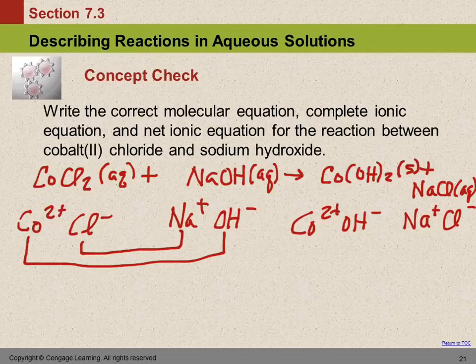On the left side of the arrow, we have one cobalt ion, and on the right side, we have one cobalt. So that's okay. On the left, we have two chlorides, and on the right, we only have one. So we need to put a 2 in front of the NaCl, so that we end up with two Cls. Then on the left side, we have one sodium, and on the right now, we have two sodiums.